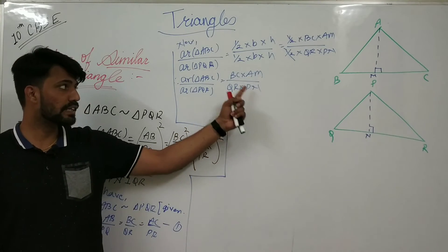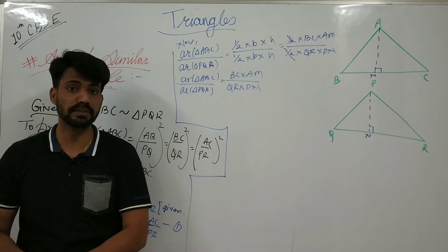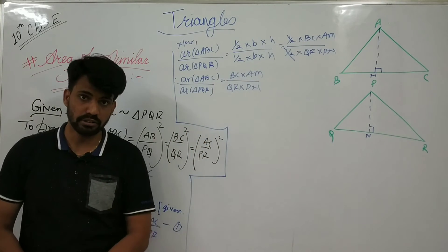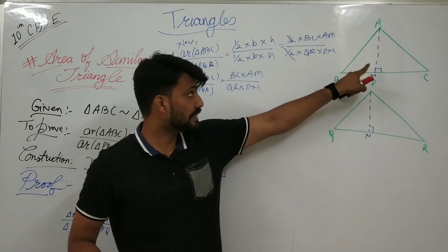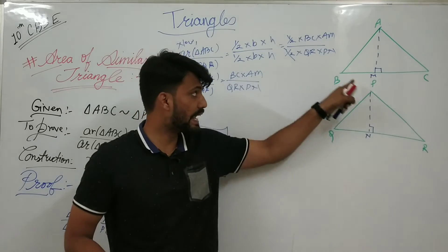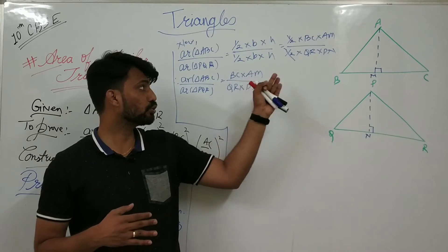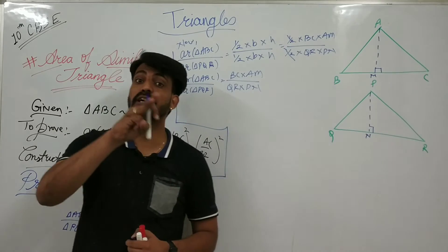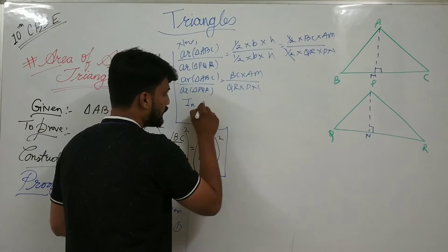Now, if I want to get BC²/QR², I need to show that AM/PN is also equal to BC/QR. If I can show AM by PN equals BC by QR, then I can write BC × BC upon QR × QR, which becomes (BC/QR)². To do this, I consider triangles ABM and PQN. If I can show these two triangles are similar, I can establish the required ratio.